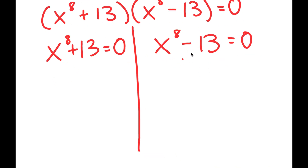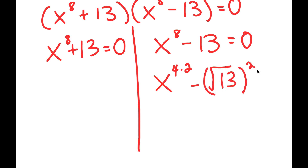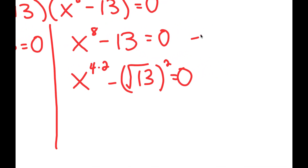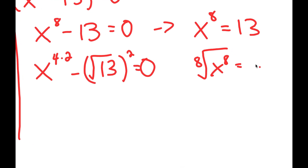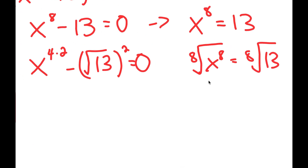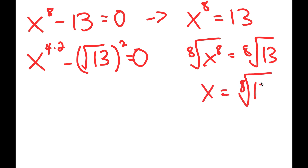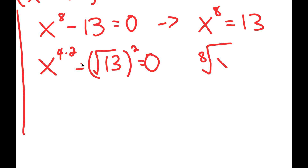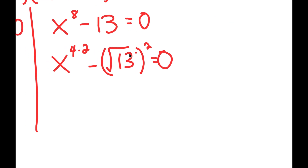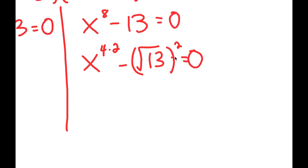Let's first solve x to the power of 8 minus 13 equals 0. I rewrite this as x to the power of 4 times 2 minus the square root of 13 squared equals 0. I'm not solving it by simply adding 13 and taking the 8th root on both sides, because that method doesn't give me all my solutions — it just gives two solutions, but there are many more. So using the same exponent property, x to the power of 4 times 2 becomes x to the power of 4 to the power of 2.